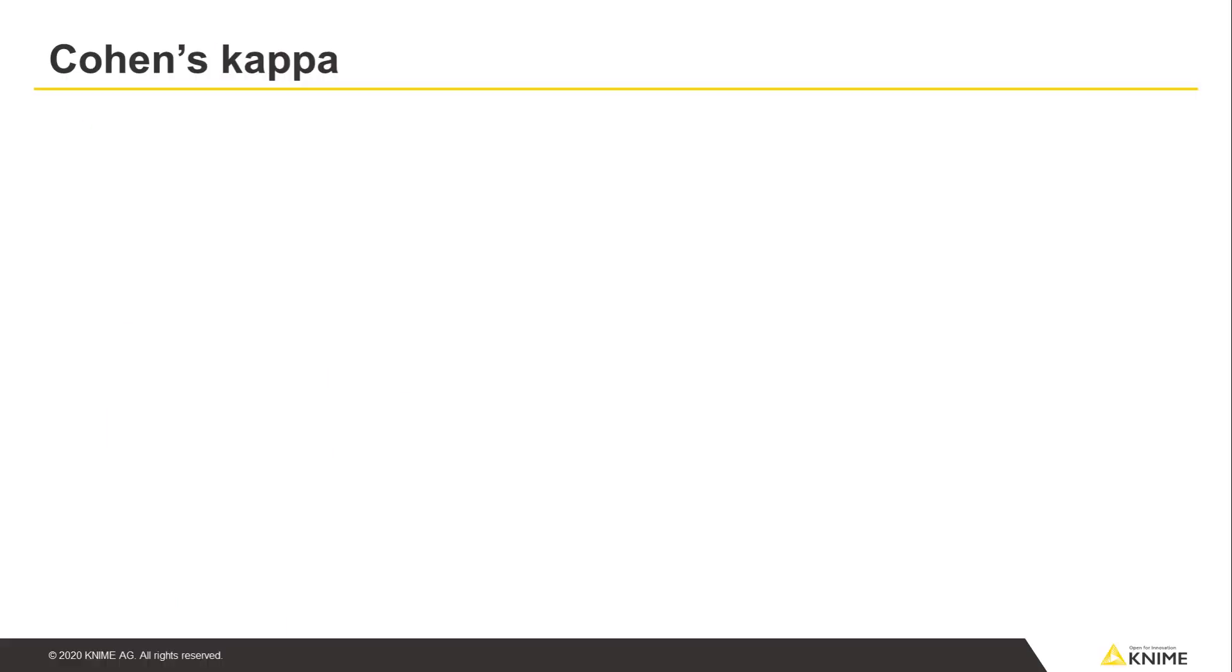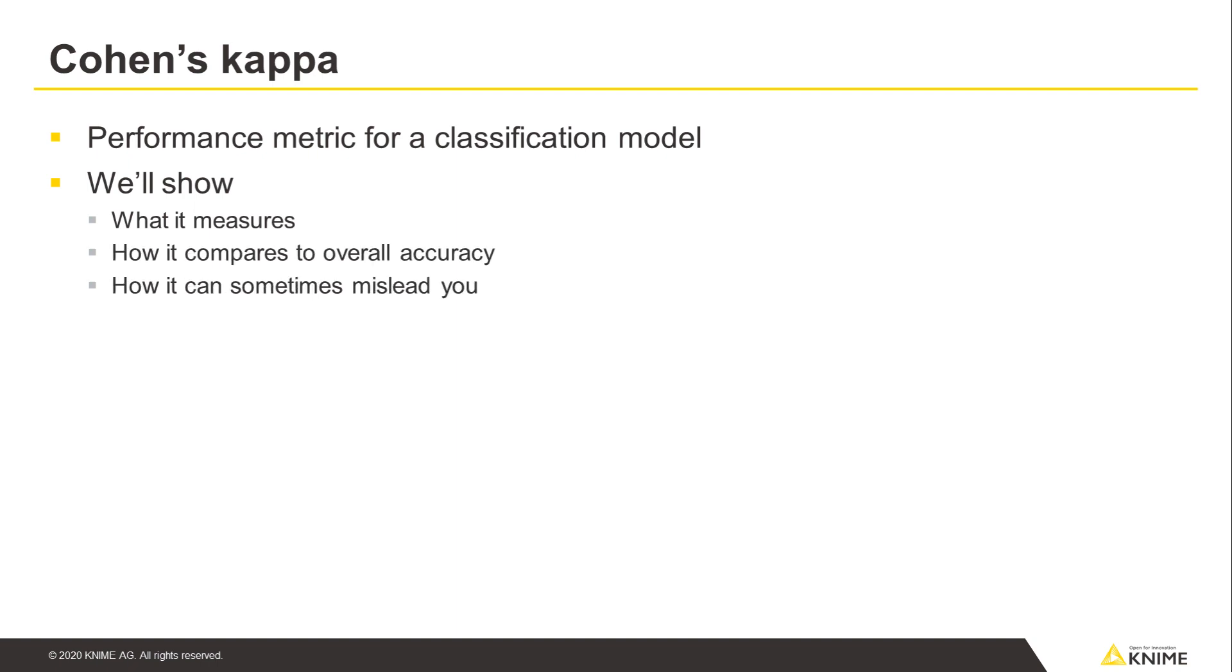In this video, we'll take a look at Cohen's kappa, a performance metric for a classification model. We'll show what it measures, how it compares to overall accuracy, and how it can sometimes mislead you.